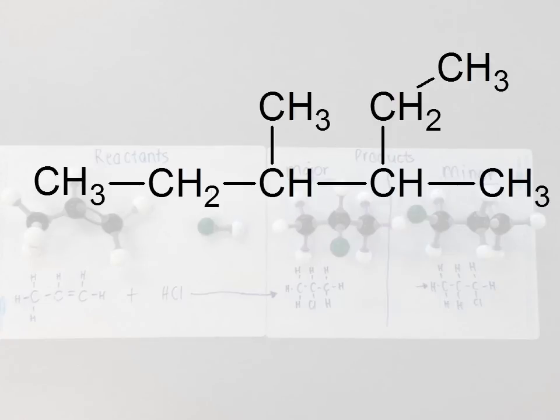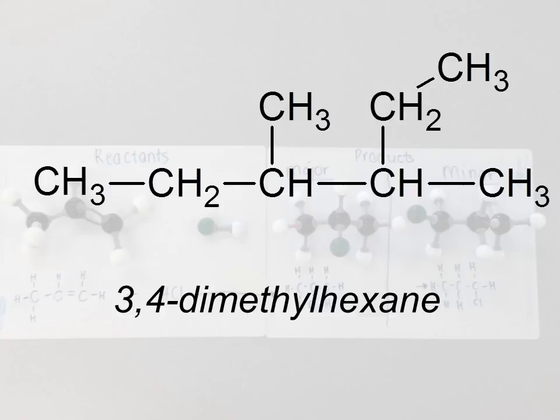Right, this one here. A lot more complicated. We've tried to trick you there. Look, the longest chain actually has six continuous carbons in it if we take this one down here. We have a methyl group coming off the third and the fourth. It doesn't matter which end we start from, it's off the third and the fourth in both occasions. So this here is going to be 3,4-dimethylhexane.